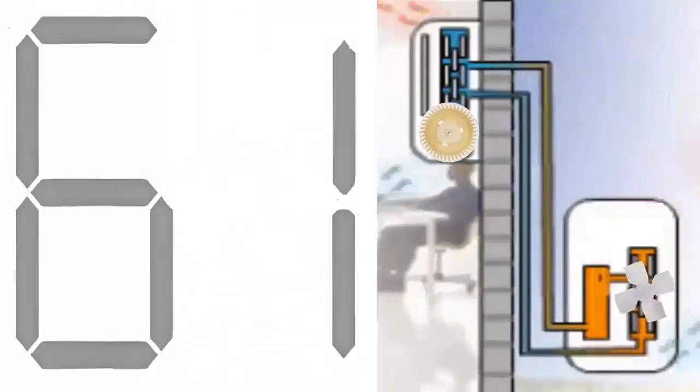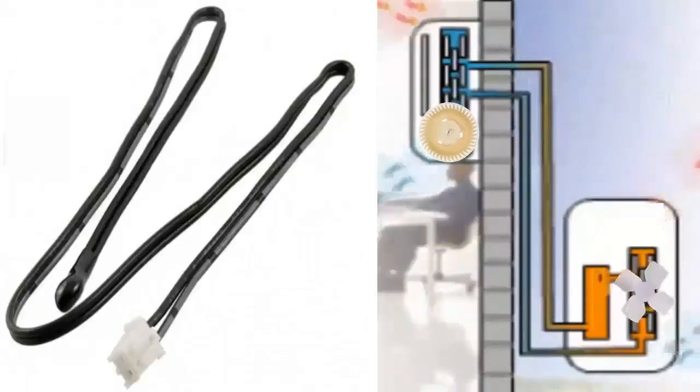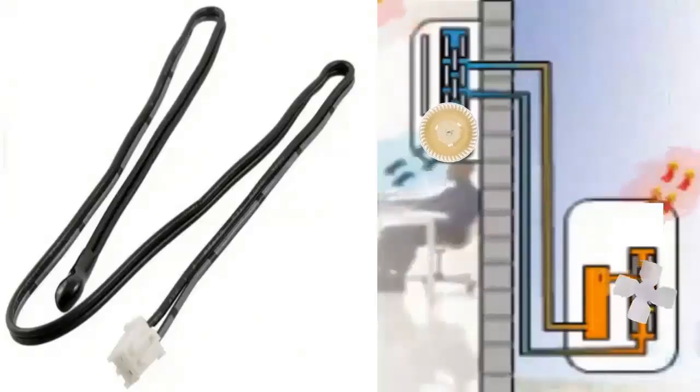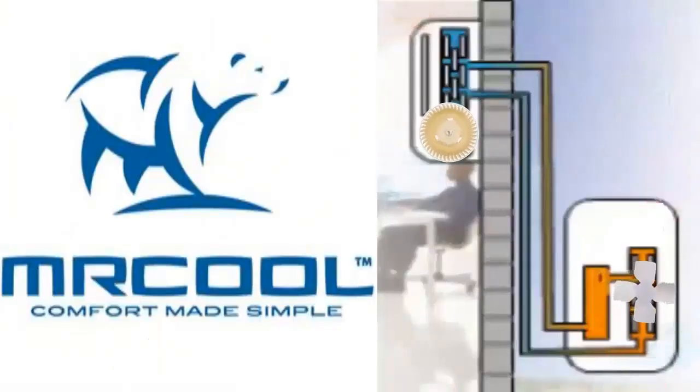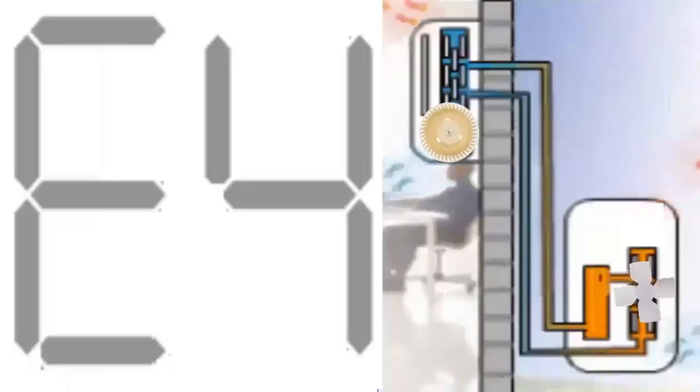2. Codes related to the indoor air temperature sensor located in the indoor unit. These are identified by the codes E4 and EH60.